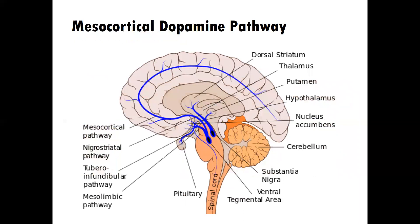We'll learn about the mesocortical dopamine pathway. There are two particular areas we'll pay a lot of attention to: the nucleus accumbens and the ventral tegmental area, which are large producers of dopamine. Dopamine is a very important neurotransmitter to understand with addiction because of its role in motivation.